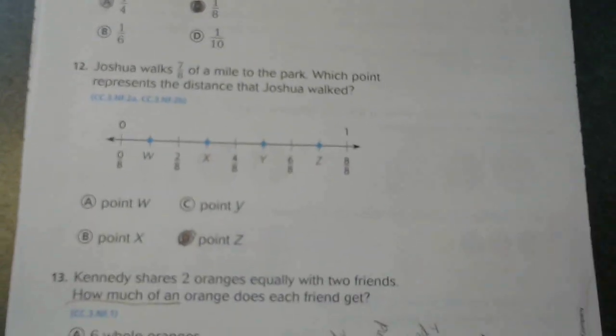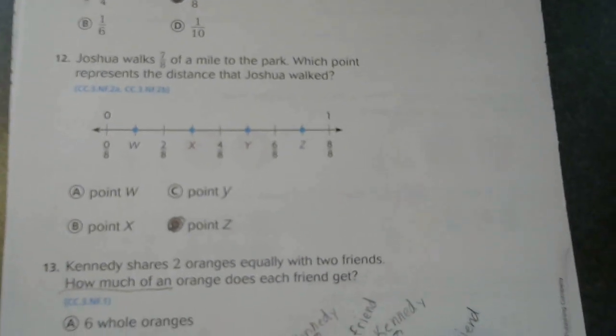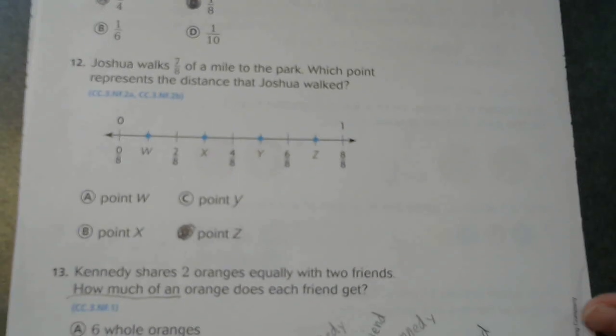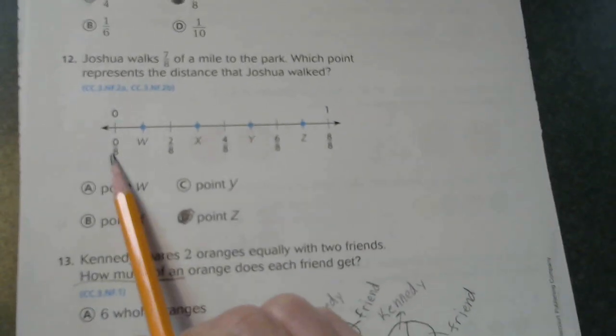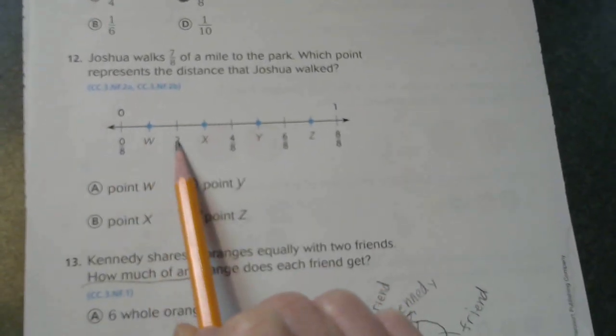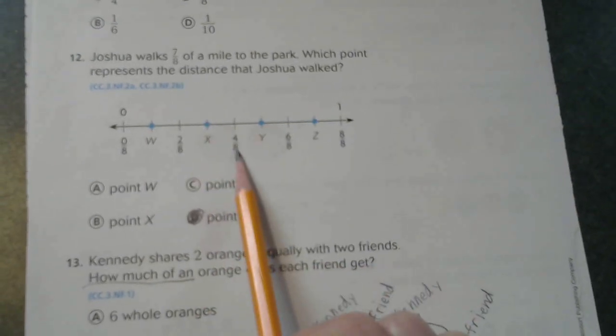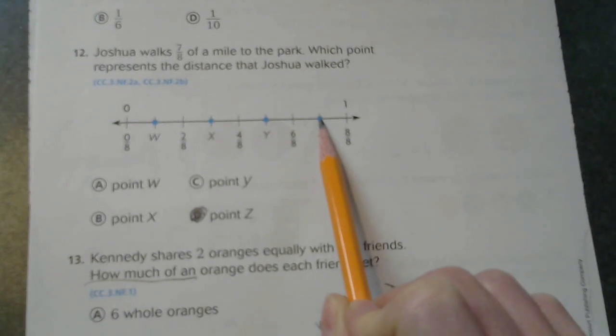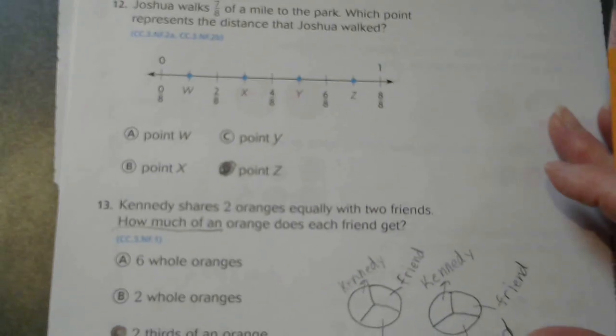Now Joshua will walk seven-eighths of a mile to the park. Which point represents the distance that Joshua walked? Well, zero-eighths, one-eighths, two-eighths, three-eighths, four-eighths, five-eighths, six-eighths, seven-eighths. So Z represents seven-eighths on the number line.